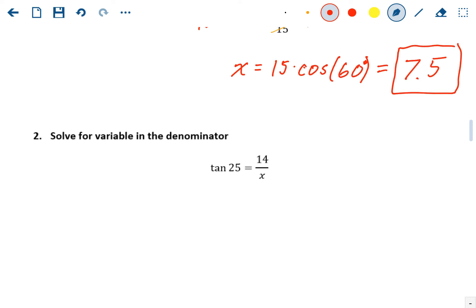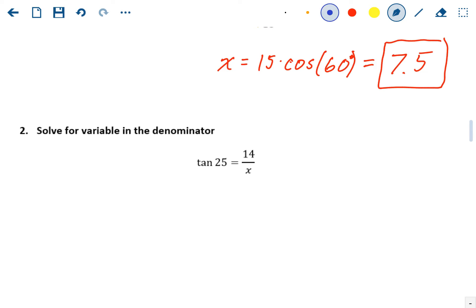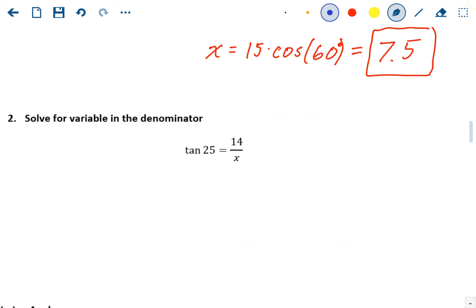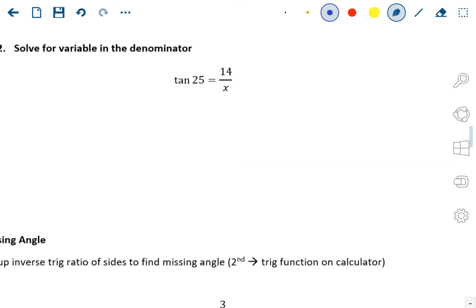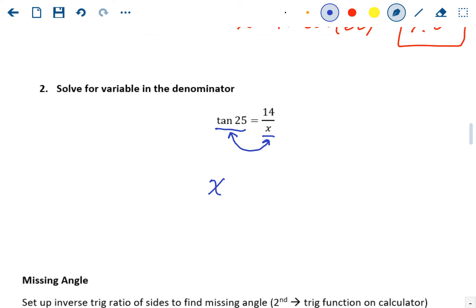Scenario two is what if your variable is on the denominator. So you know the angle, you know the top side, but you don't know the bottom side. In this scenario, you could just switch the position of the denominator and the left side. So if you want to find the tangent of 25 equals 14 over x, you just switch those two positions and make it x equal 14 divided by the tangent of 25.